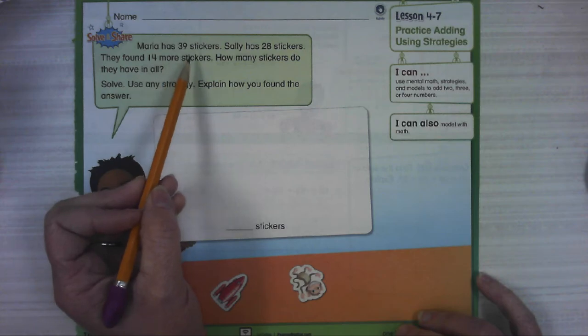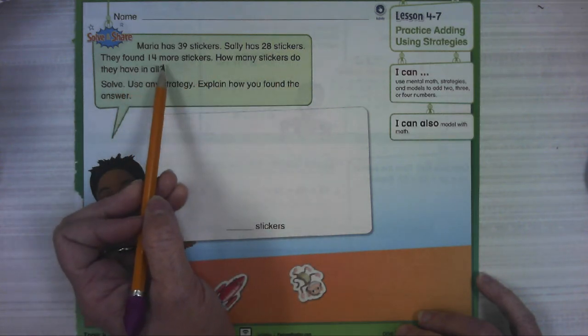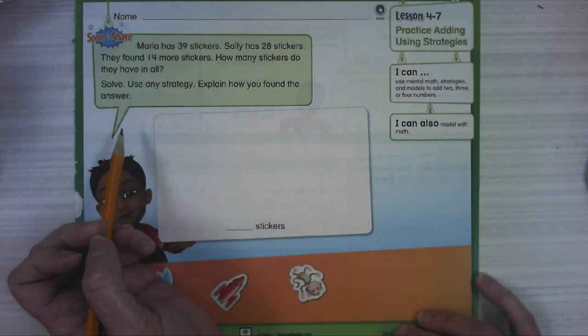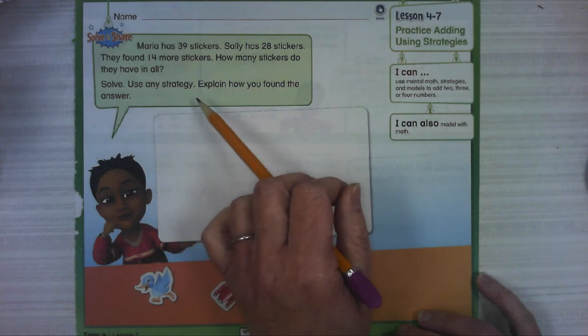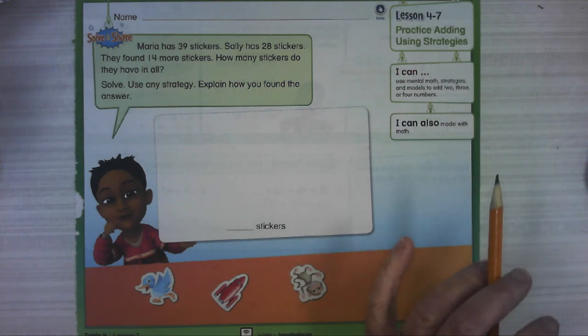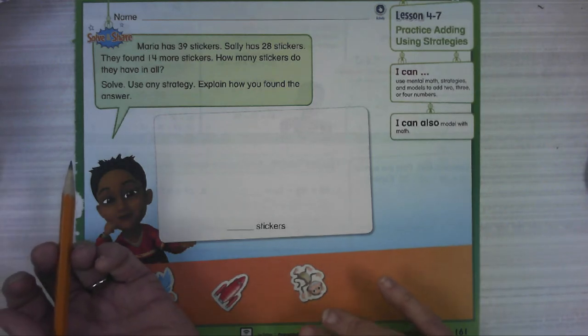Maria has 39 stickers. Sally has 28 stickers. They found 14 more stickers. How many stickers do they have in all? We're going to solve using any strategy and explain how we found the answer. Before I start, I'm going to think to myself, what is this problem about? It's about stickers, right?